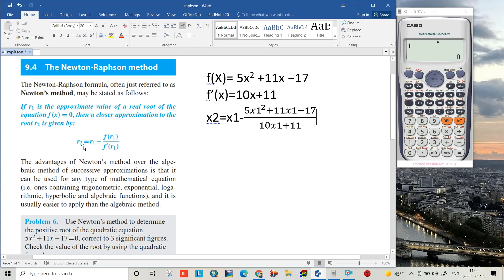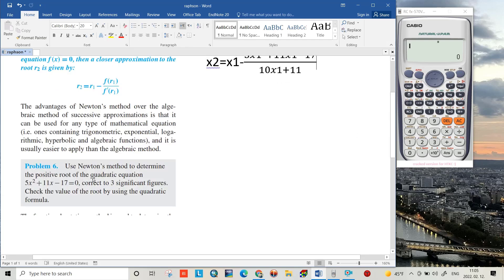I have this problem which asks to use Newton's method to determine the positive root of the quadratic equation 5x² + 11x - 17 = 0 for three significant figures, and check the value of the root by using the quadratic formula.